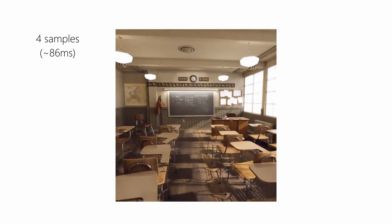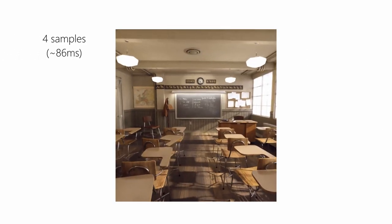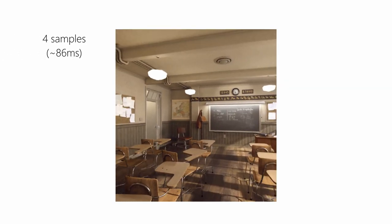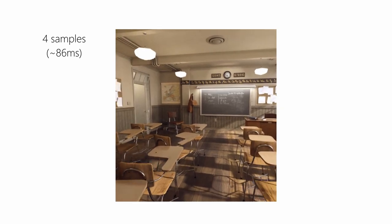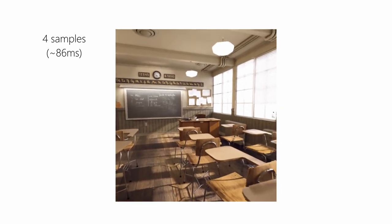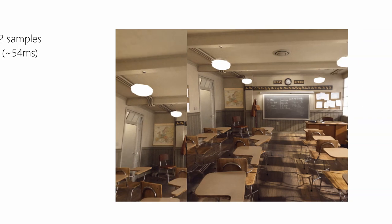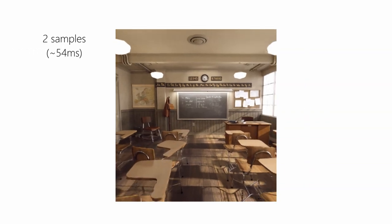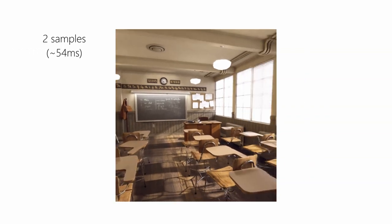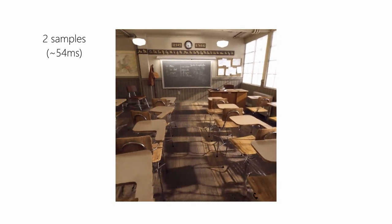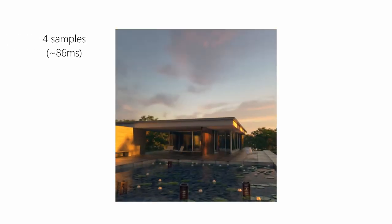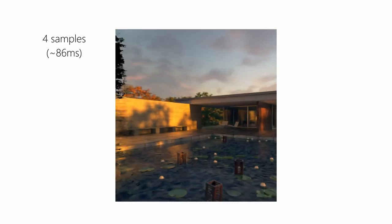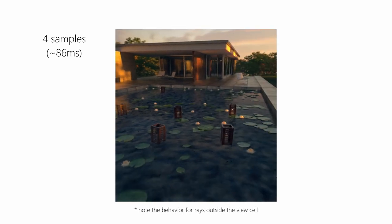We additionally show a video capture of a DoNerf prototype implementation running in real time on a single consumer GPU, based on CUDA and TensorRT. At a resolution of 800x800 with 4 samples per ray, we achieve around 10 frames per second. At only 2 samples per ray, our prototype achieves around 20 frames per second.